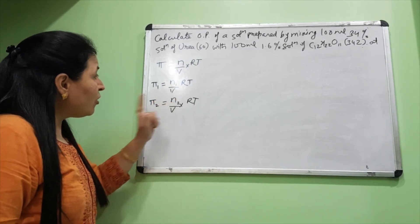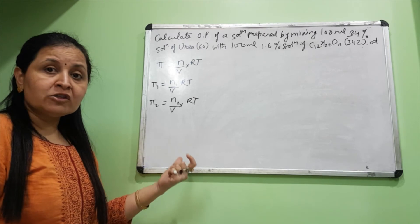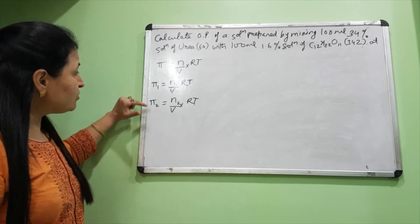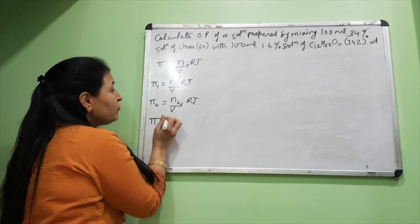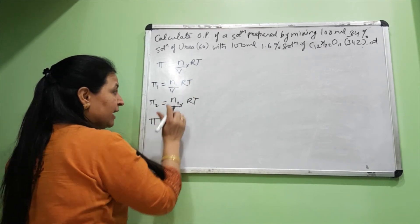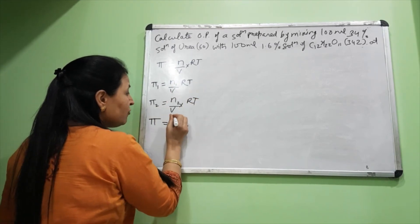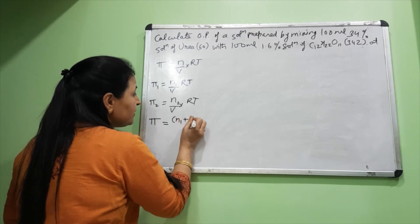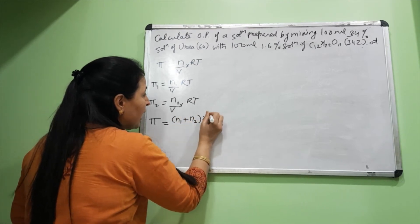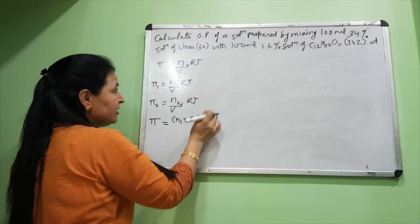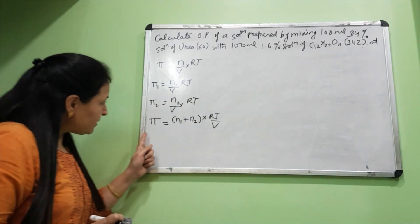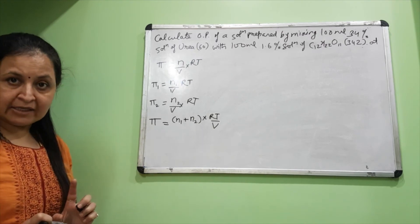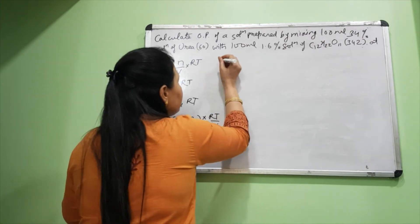So only the number of moles of the two solutes changes, and the final osmotic pressure comes from adding the osmotic pressures of both. The final π is the sum of the first and second equations. If we add these two equations, we get π = (n₁ + n₂)(RT/V). RT/V is common and comes out, and in brackets we get n₁ + n₂. Now we just substitute values and we'll get our answer.